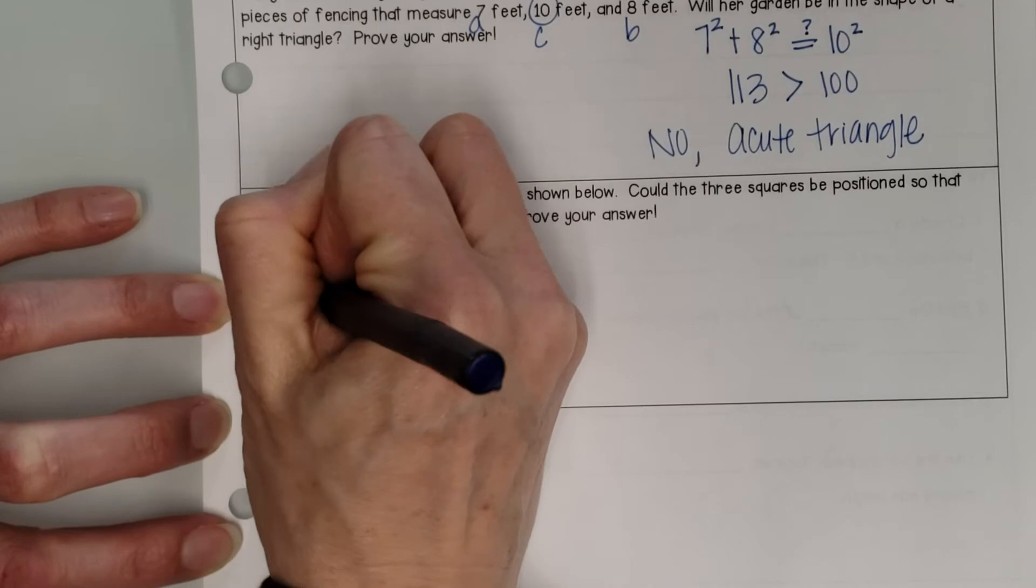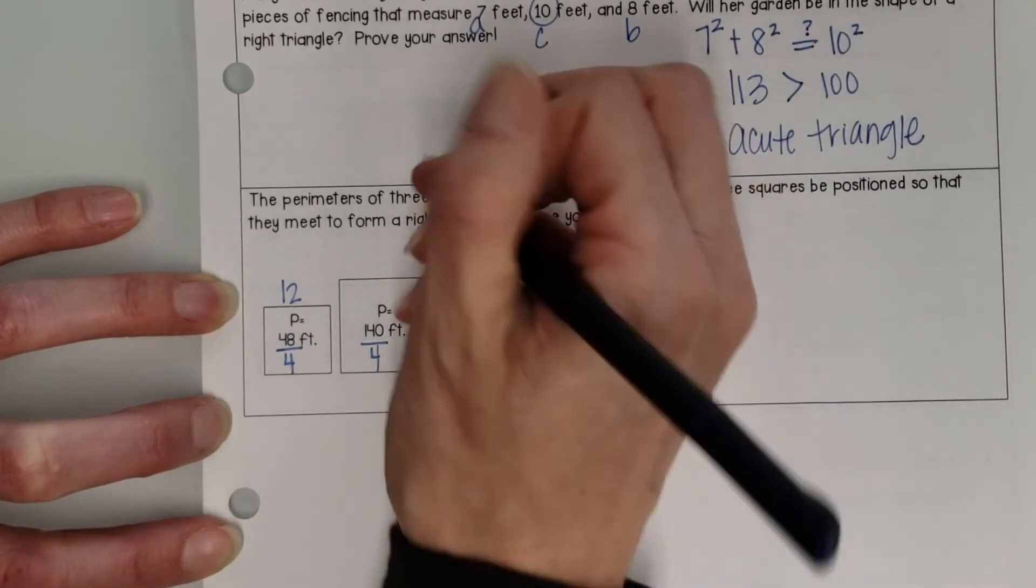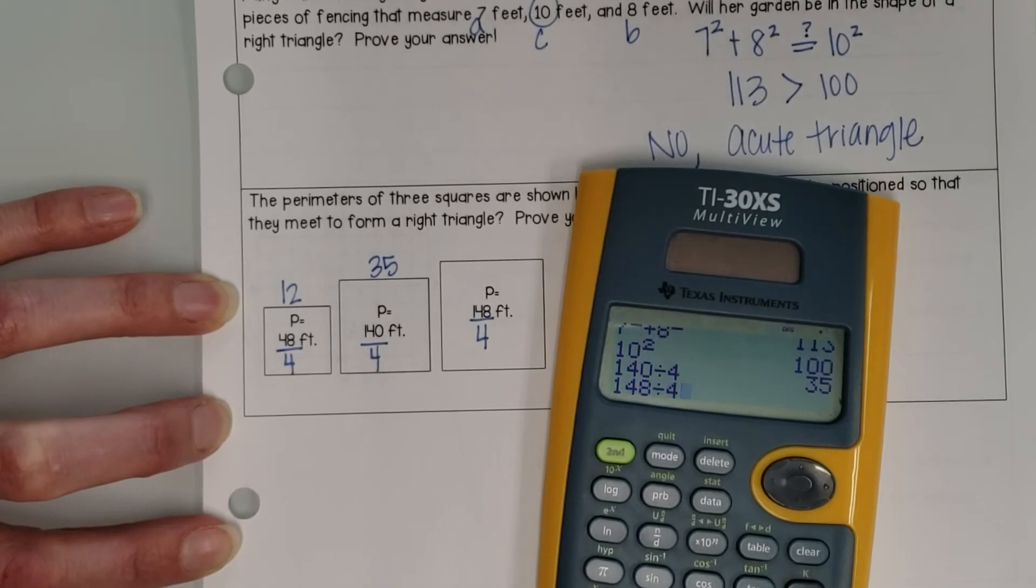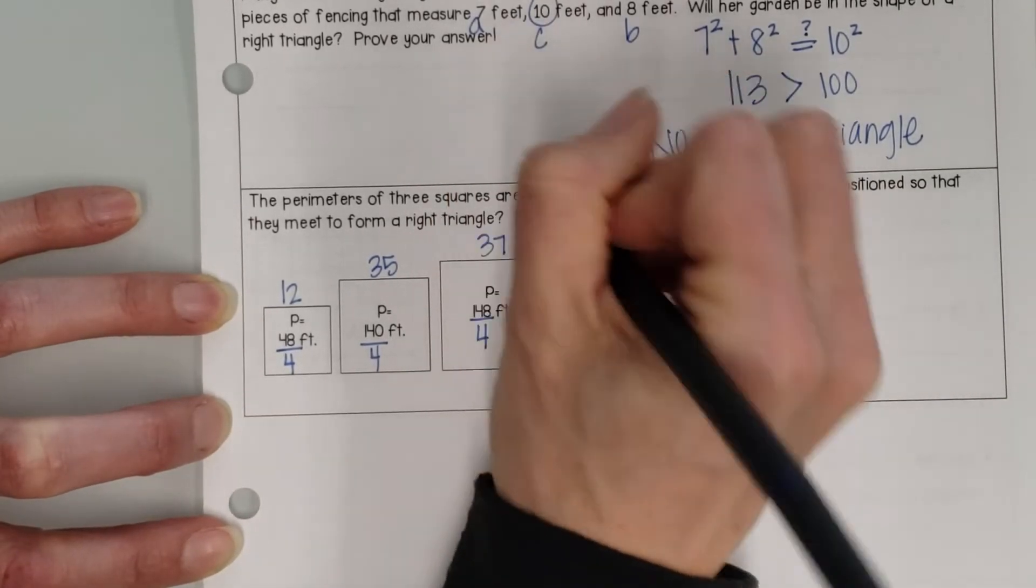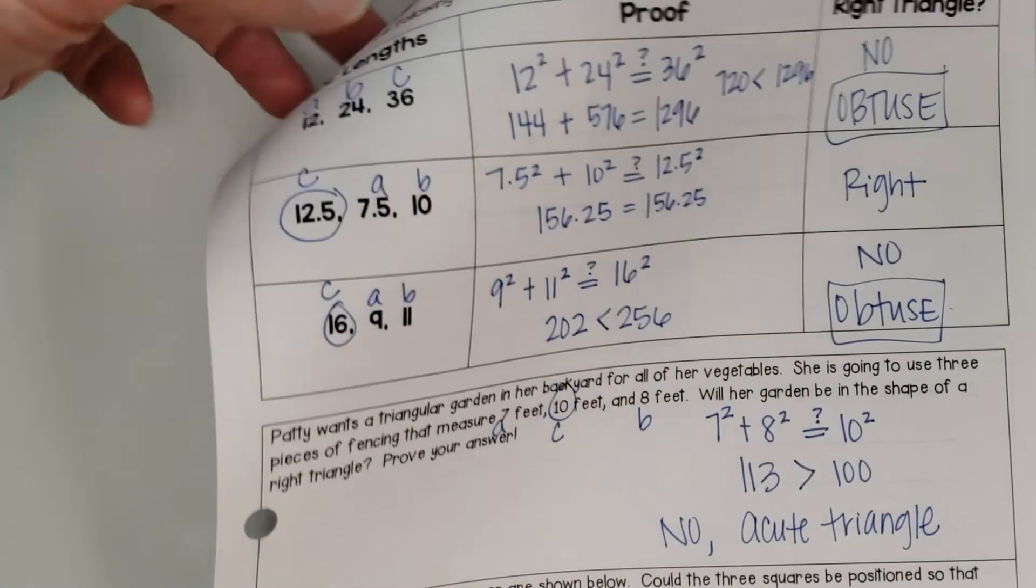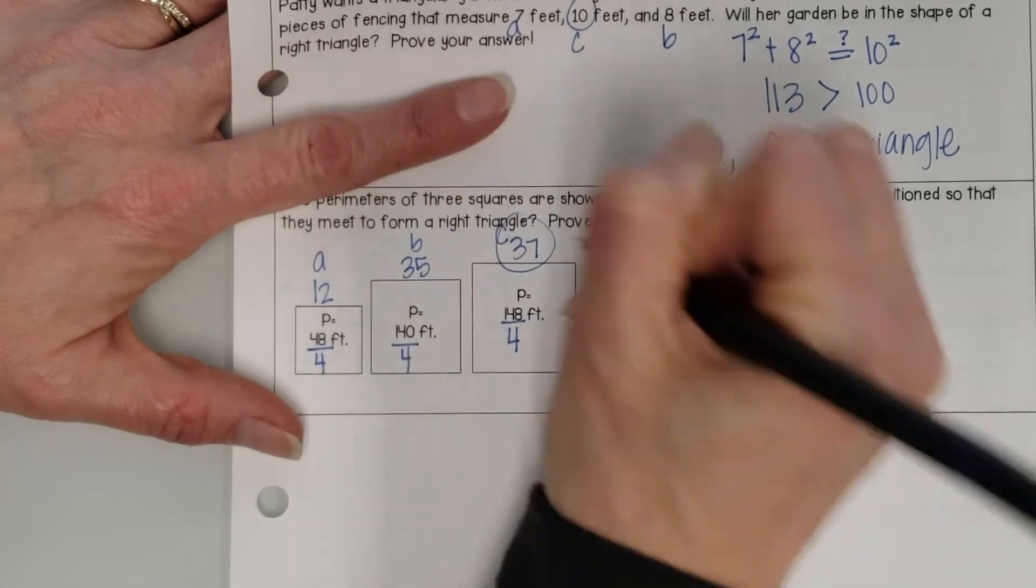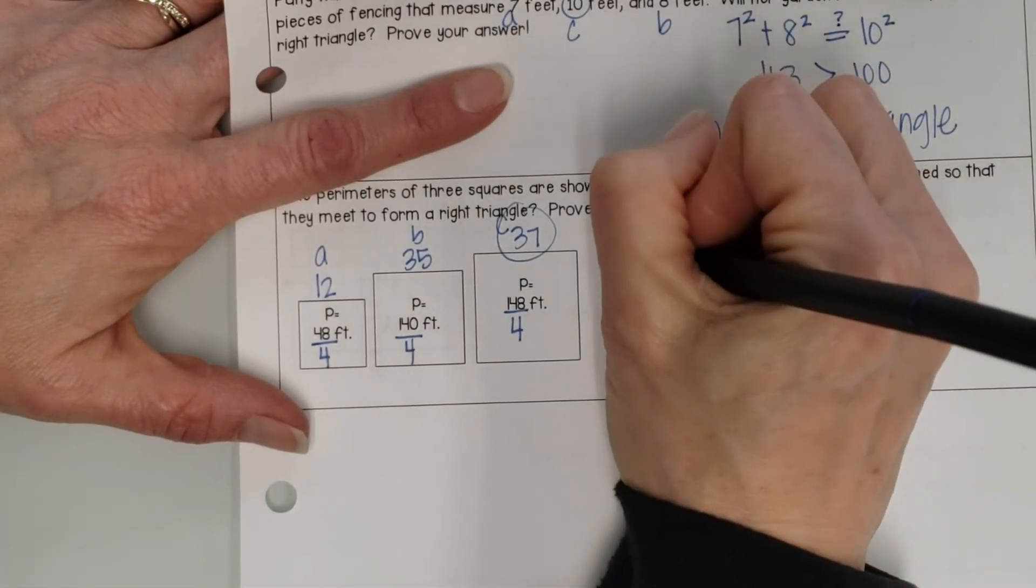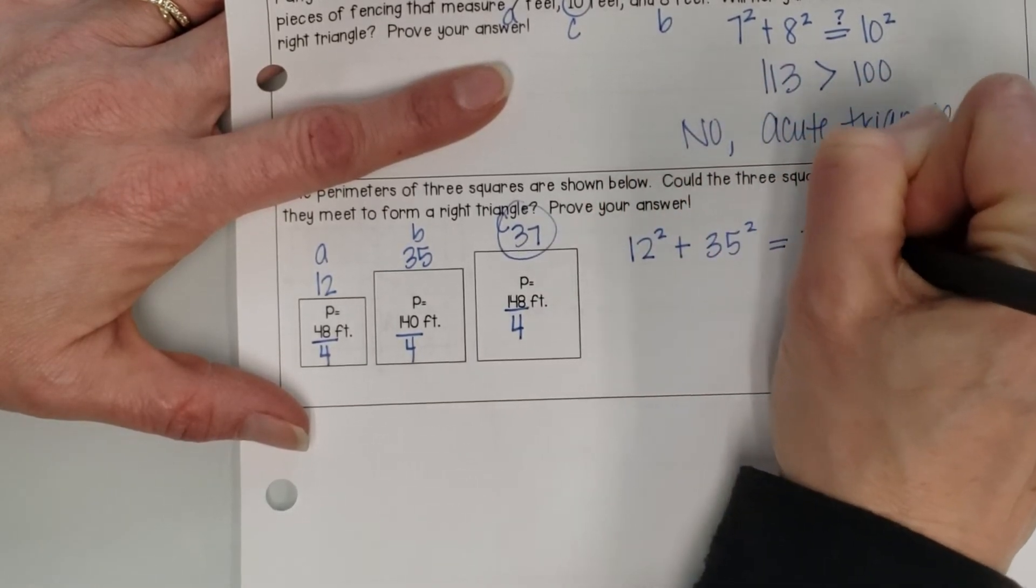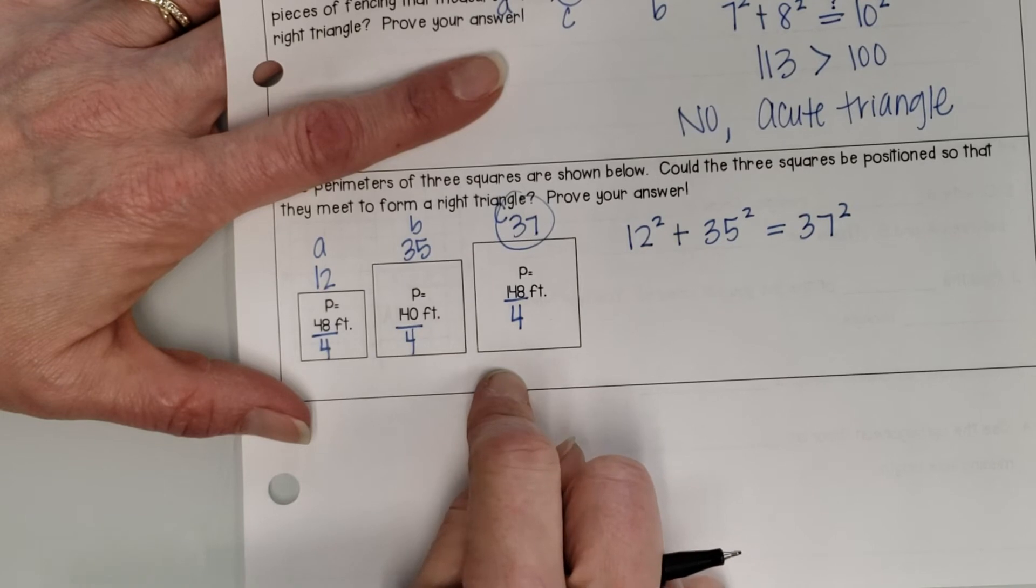Okay, so when I divide 48 by 4, I get that this one's side length is 12, and 140 divided by 4 is 35. So this one's side length is 35, and 148 divided by 4 is 37. So now I have side lengths, and I'm going to do the same thing I did up here, proving to see if it's just a right triangle, right? So my biggest one is 37. So that's my C. So we'll make this one A, this one B, and this one C. So I want to know if A squared plus B squared equals C squared, then I will have these squares could form a right triangle when put together.